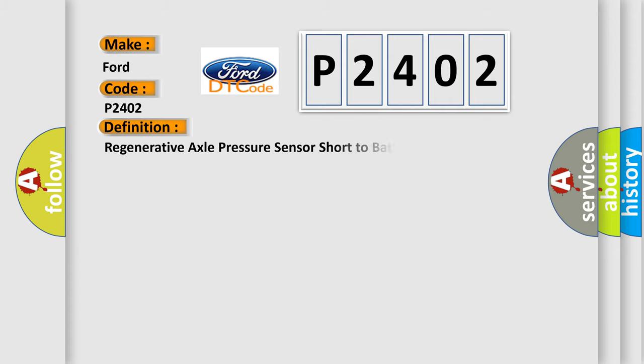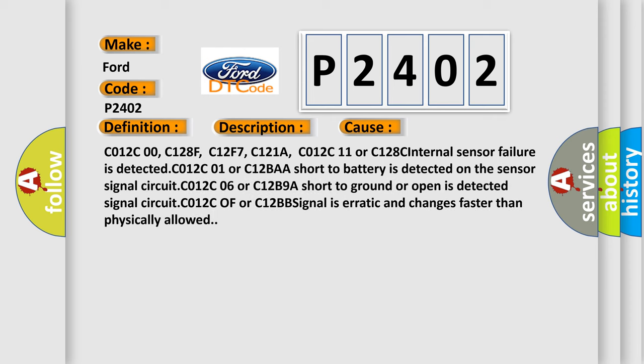The basic definition is regenerative axle pressure sensor short to battery. And now this is a short description of this DTC code. Ignition on, ignition voltage is greater than 10 volts. This diagnostic error occurs most often in these cases.